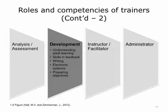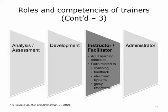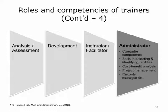In the development role, the trainer's competencies include understanding adult learning, providing feedback to learners, excellent oral and written communication skills, proficiency with electronic systems for communication, and preparing good learning objectives for the training. In the role of instructor or facilitator, the primary competencies needed are adult learning principles, coaching and feedback skills, and understanding group dynamics and processes in a training environment. As an administrator, the trainer is required to have computer competence, be able to select and identify training facilities including audio-visual equipment, and perform a cost-benefit analysis looking at costs involved in creating the training and the benefits the organization will experience.